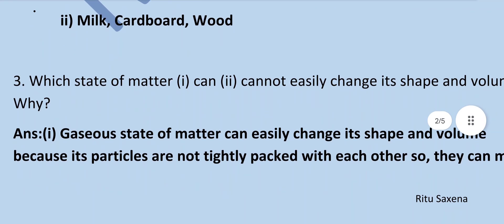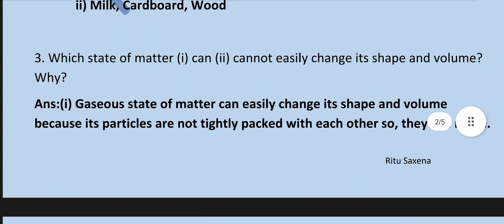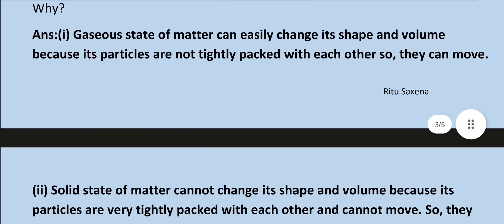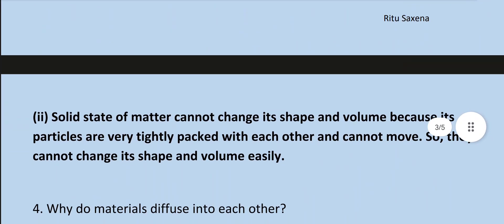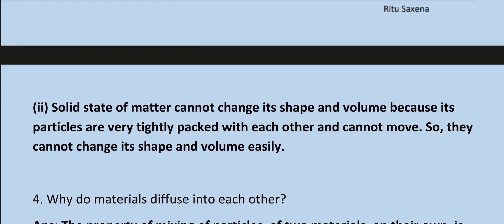Which state of matter can or cannot easily change its shape and volume, and why? Gaseous state of matter can easily change its shape and volume because its particles are not tightly packed with each other, so they can move. Solid state of matter cannot change its shape and volume because its particles are very tightly packed with each other and cannot move.